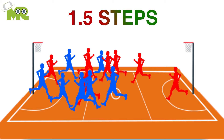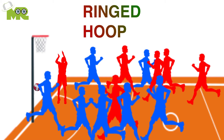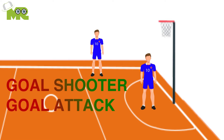11. The ball must go through the ringed hoop for a goal to be given. 12. Unlike other sports, only the goal shooter or goal attack can score goals in netball, and they must be within the semicircle when they shoot.